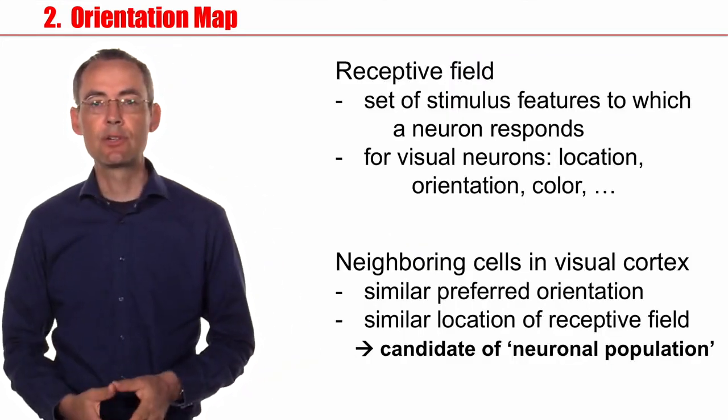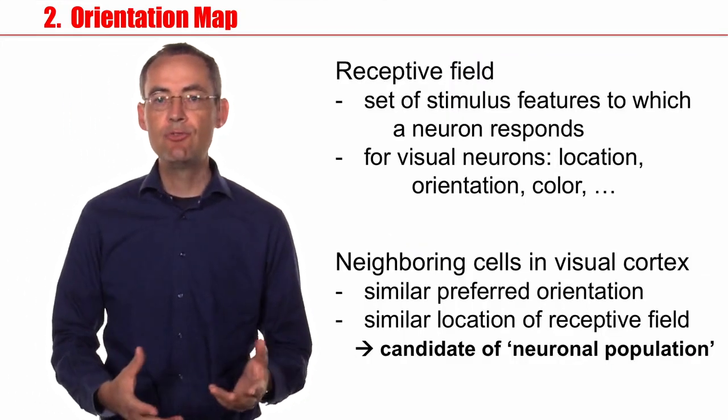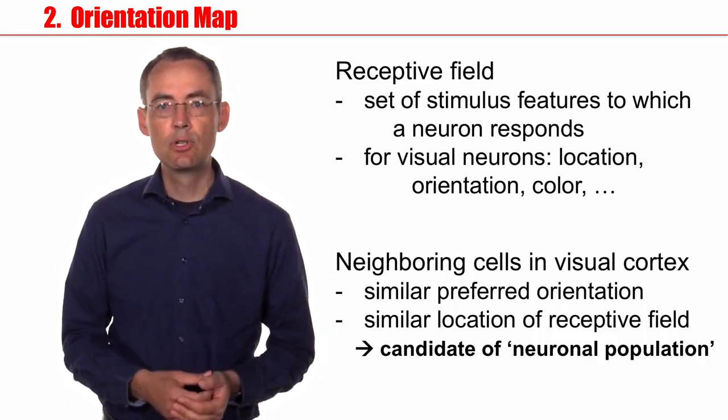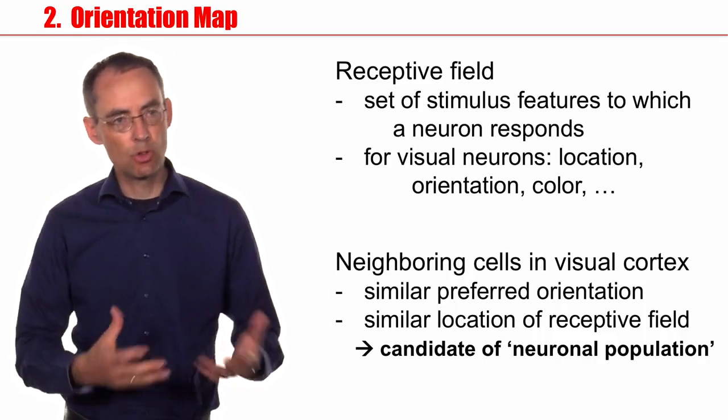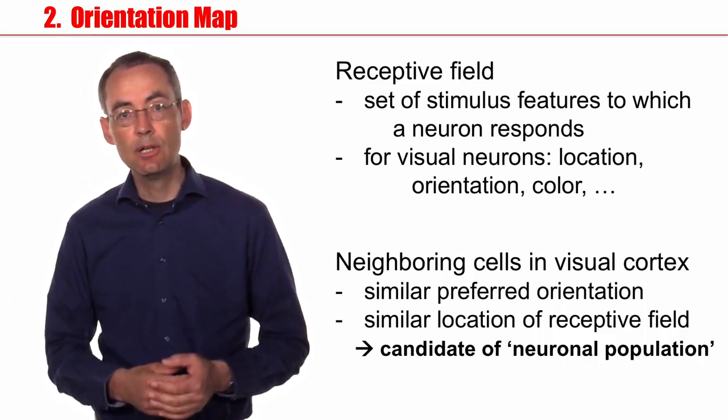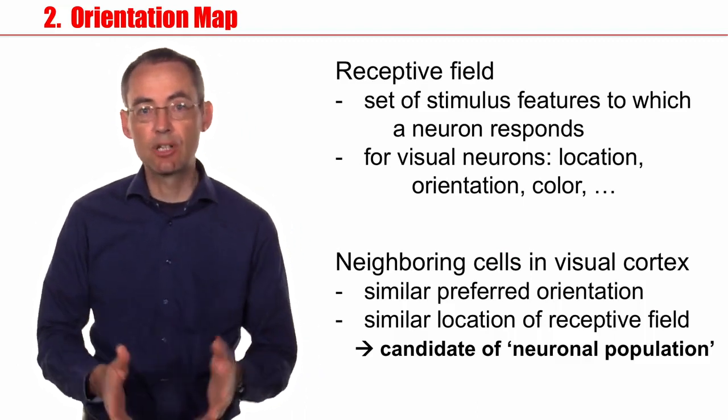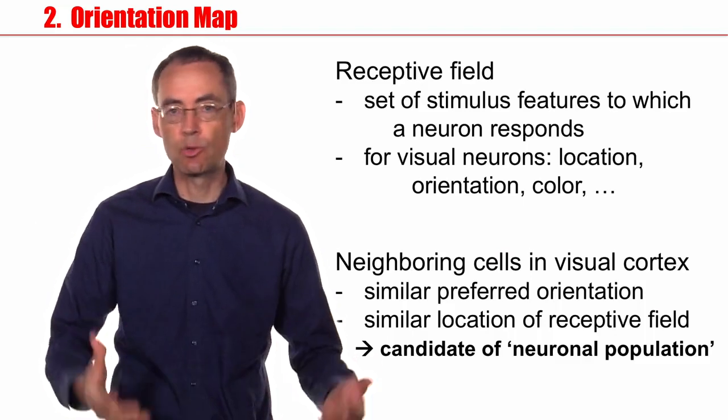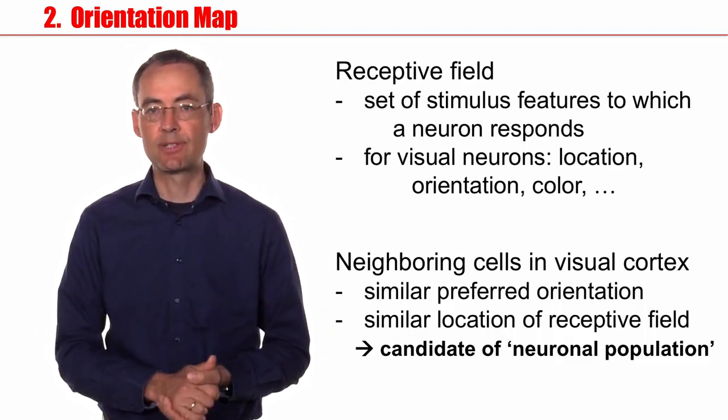So let me summarize this section. The receptive field is the set of all stimulus features to which a neuron responds. In visual cortex, this would be the location of the receptive field, the orientation of the receptive field, maybe the color, maybe something else. And similar notions hold also in audition, in some other sensory cortex, and so forth.